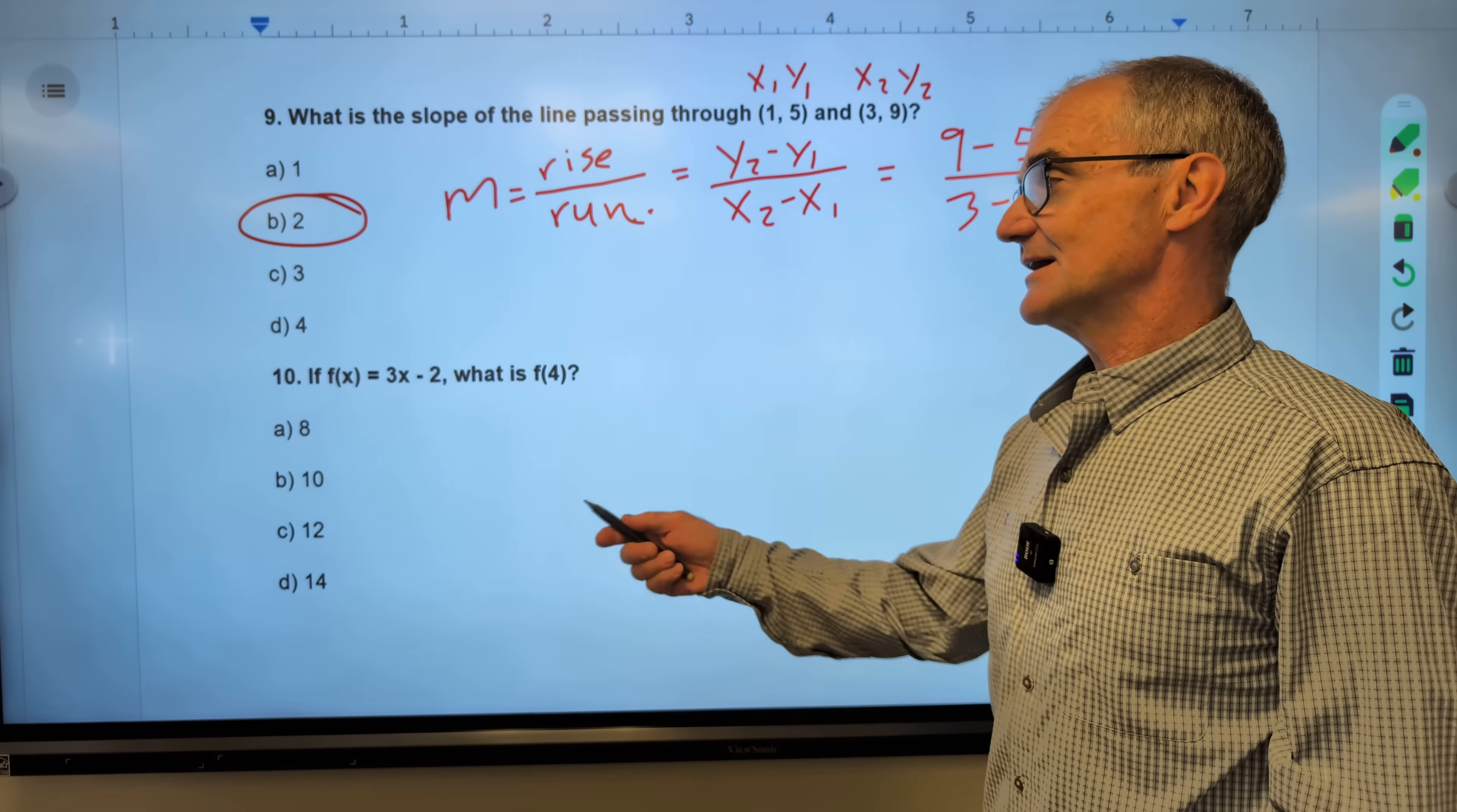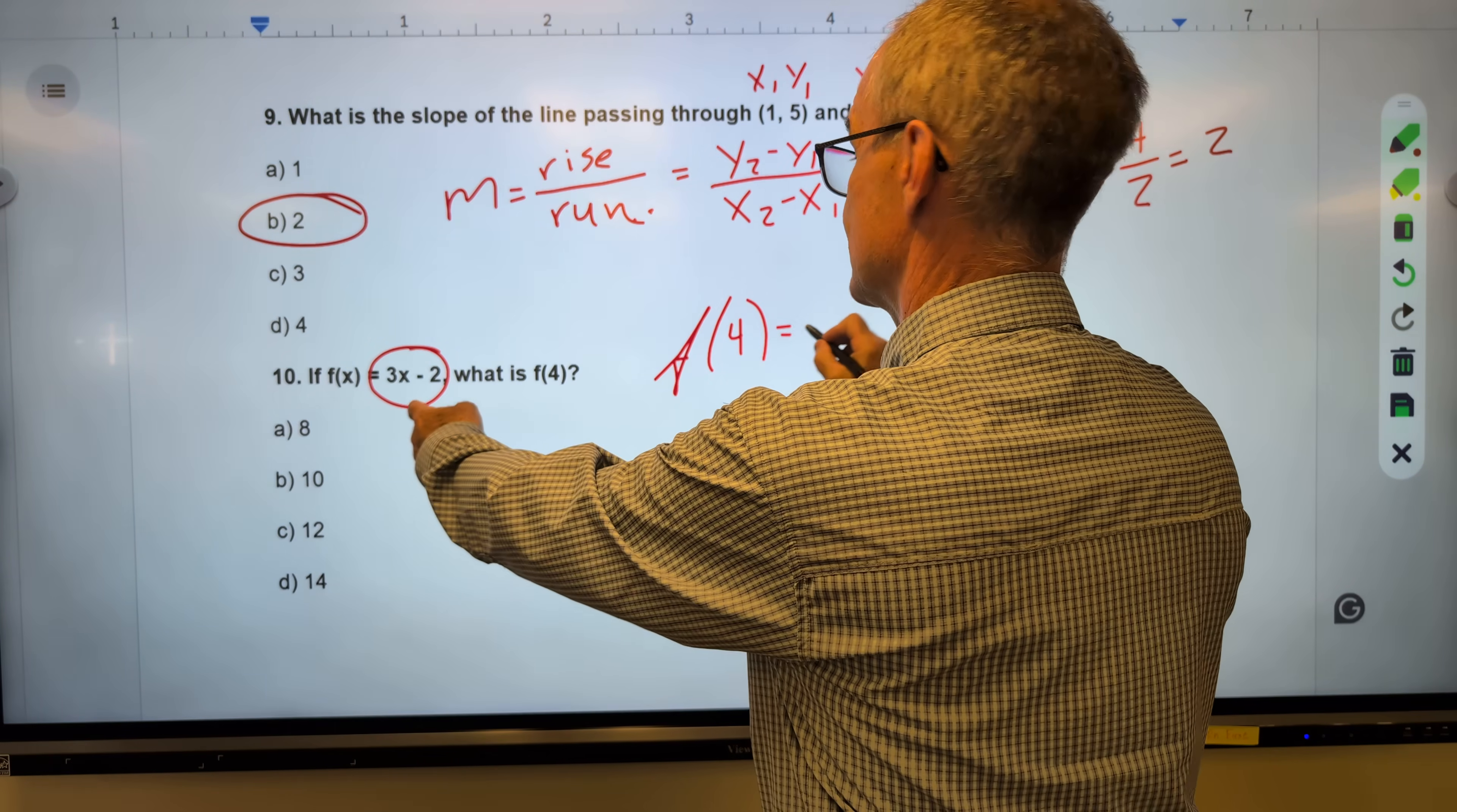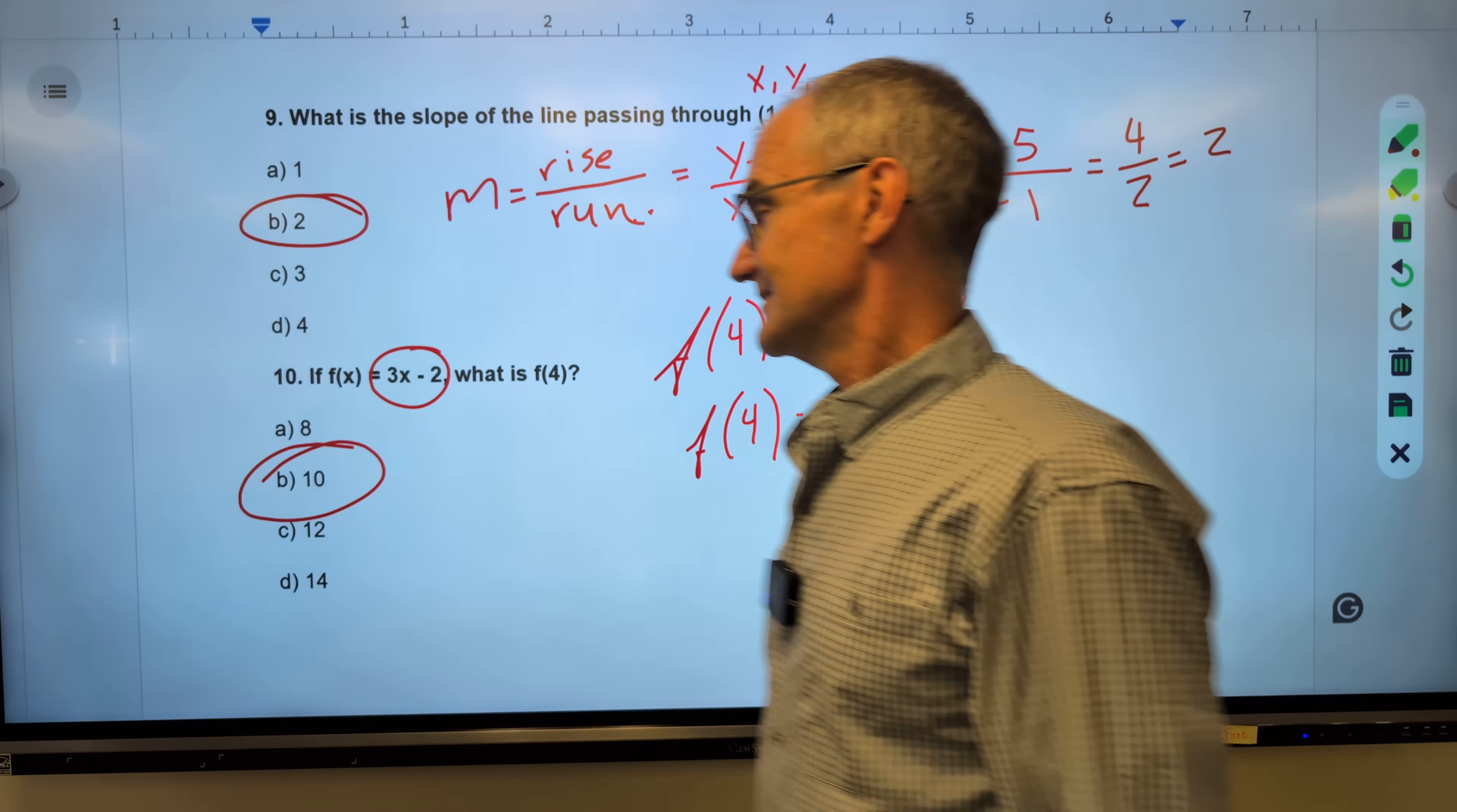Number 10. This is about function notation. This is saying f of x, it is a function. That's the same thing as y. f of x is equal to 3x minus 2. What is f of 4? So this is saying this places in there. So f of 4 is equal to 3 times x. Well, I'm telling you x is 4 minus 2. So f of 4 is equal to 12 minus 2. 12 minus 2 is equal to 10. Correct answer, answer B right there.